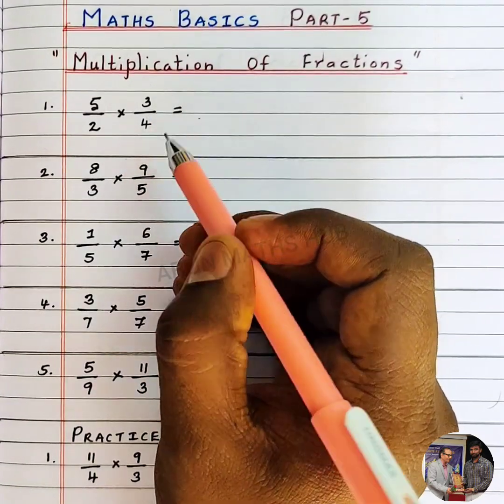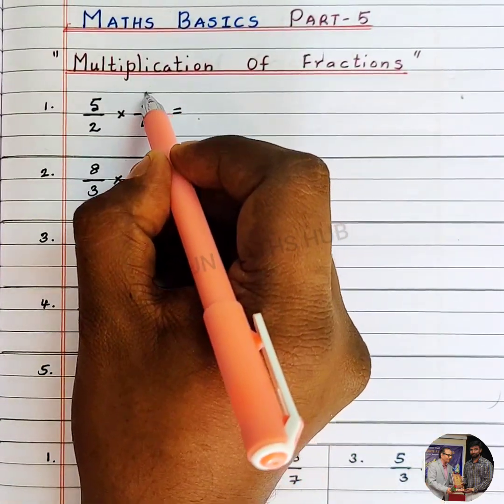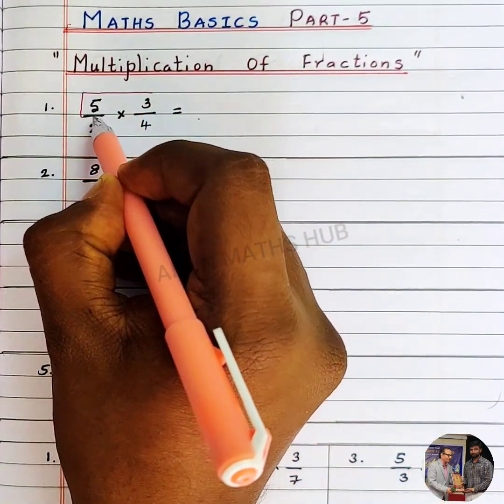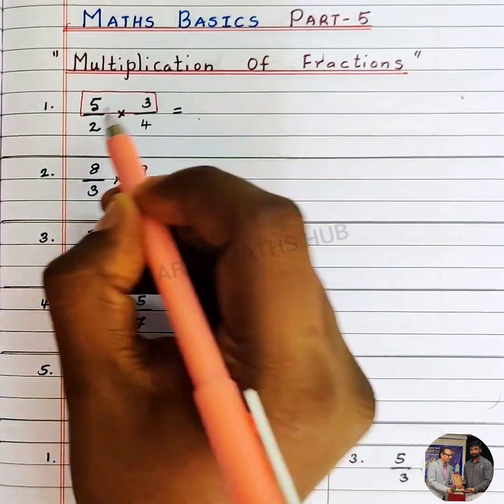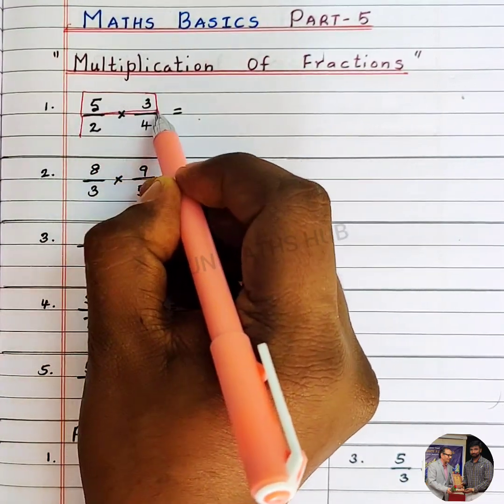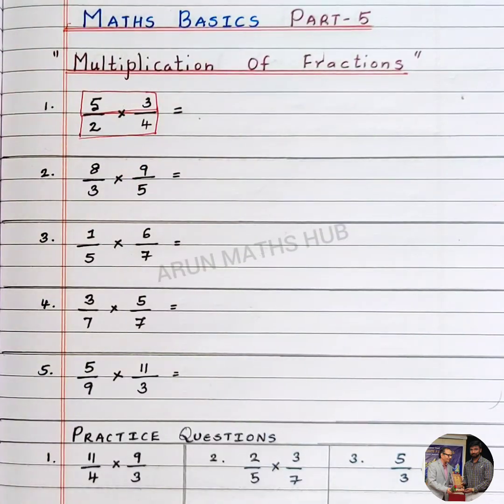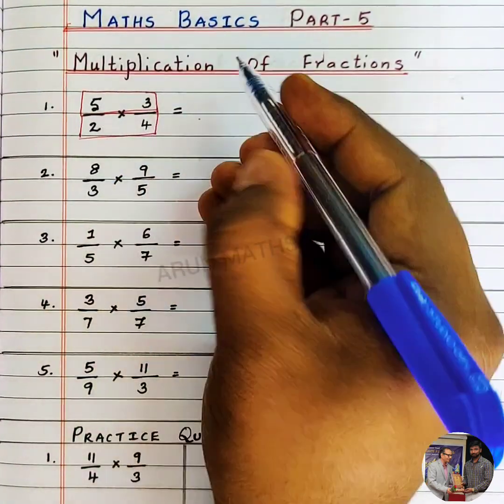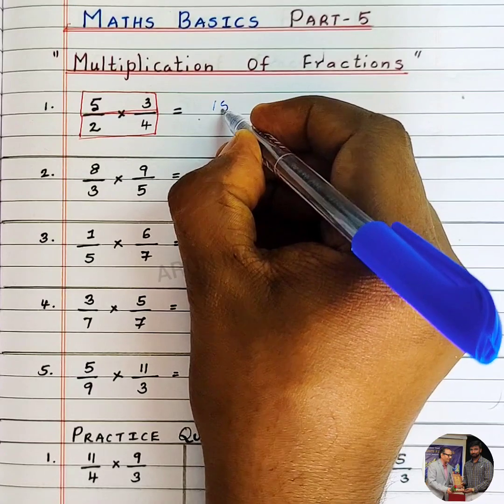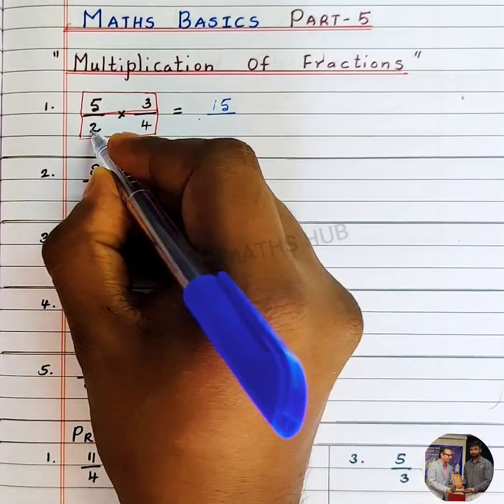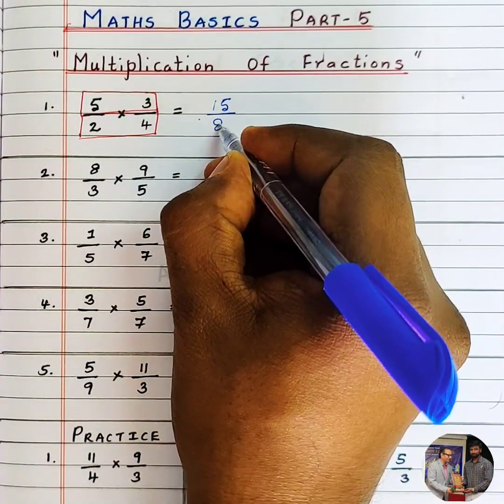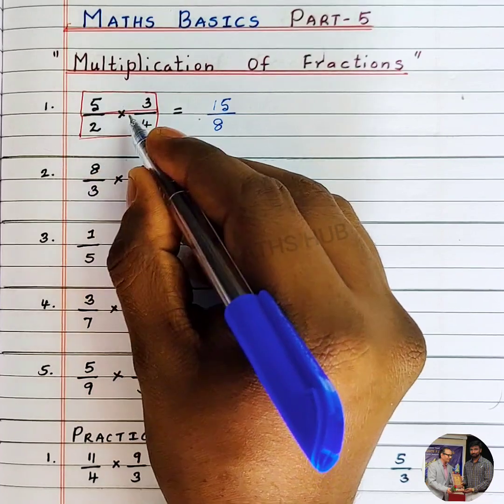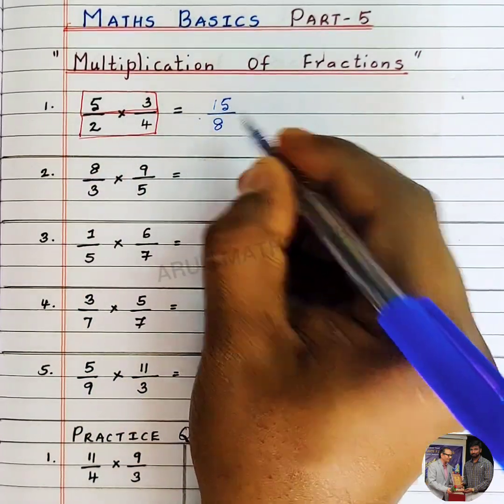What you will do here, you will multiply the numerators and you will multiply the denominators. That is, 5 into 3 is 15 and 2 into 4 is 8. So, 5 by 2 into 3 by 4 is 15 by 8.